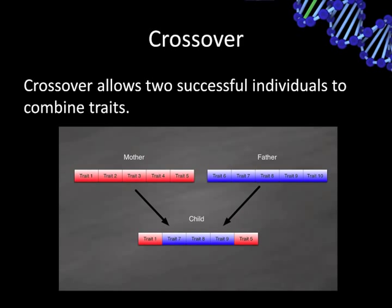Crossover involves two parents — a mother and a father, though gender is largely arbitrary. You splice the array, taking part from the mother and part from the father to create a child. This allows two successful solution vectors to pool their traits and create a child that is hopefully even more suited than either parent. You want to choose parents from the top portion of the population — those that got the best scores. This is survival of the fittest.